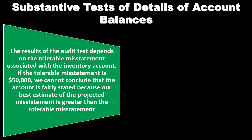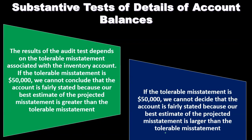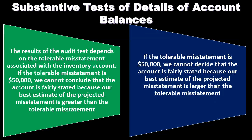If the tolerable misstatement is $50,000, we cannot conclude that the account is fairly stated, because our best estimate of the projected misstatement of $99,000 is greater than the tolerable misstatement of $50,000. So in this example, with a projected misstatement of $99,000 versus a tolerable misstatement of only $50,000, we cannot decide that the account is fairly stated.